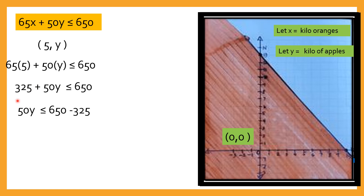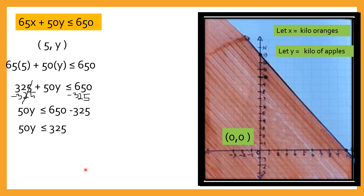We can now isolate y — mag-subtract tayo ng 325 from both sides. So dito, this becomes 0. What we have now is 50y is less than or equal to 650 minus 325. So 50y is less than or equal to 325. And then divide both sides by 50. So y is less than or equal to 6.5.